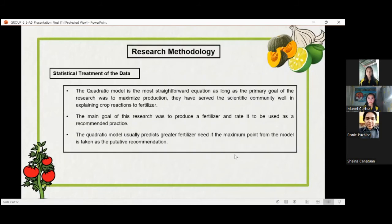For the statistical treatment of the data, the researchers will be using a quadratic model because quadratic model is the most straightforward equation as long as the primary goal of the research was to maximize production. Quadratic model has served the scientific community well in explaining crop reactions to fertilizer. Quadratic model, on the other hand, usually predicts greater fertilizer need if the maximum point from the model is taken as the particular recommendation.